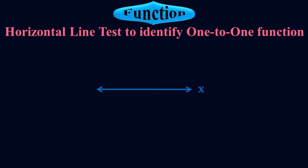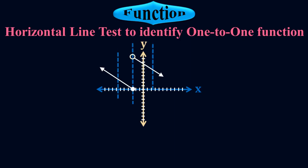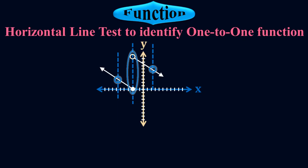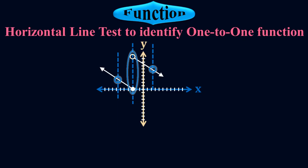Let me check one more function — a piecewise function. First, check whether it is a function by applying the vertical lines. All vertical lines pass through single points. At one stage, the line only touches the graph here because there is an empty circle, so the line passes freely without touching that piece of the graph. All three lines touch the graph at single points, therefore it is a perfect function.